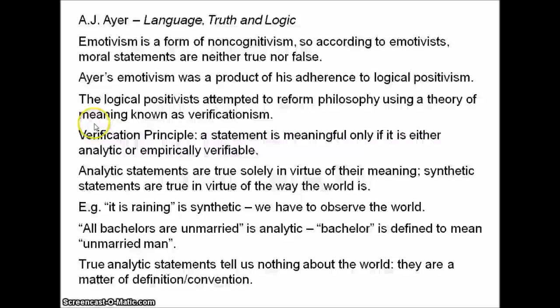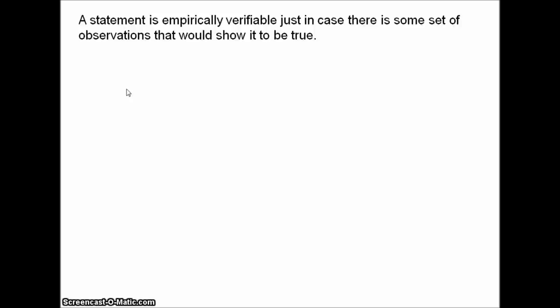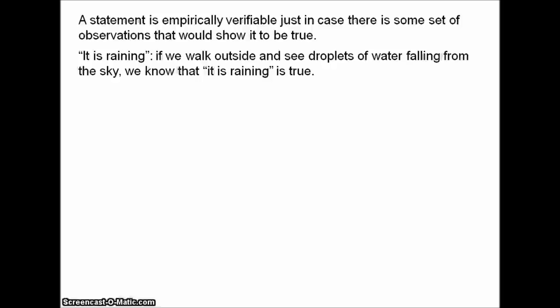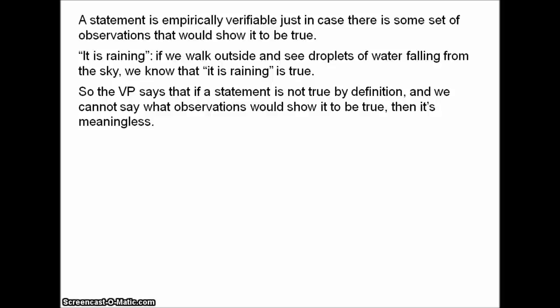What about empirically verifiable? A statement is empirically verifiable just in case there is some set of observations that would show it to be true. With 'it is raining,' we know what observations would show this to be true — if we walk outside and see droplets of water falling from the sky. So the verification principle says that if a statement is not true by definition, and we cannot say what observations would show it to be true, then it's meaningless. The logical positivists tried to use the verification principle to show that basically all of religion, spirituality, metaphysics, and huge chunks of philosophy were just meaningless. They were strictly concerned about observation and empirical science.